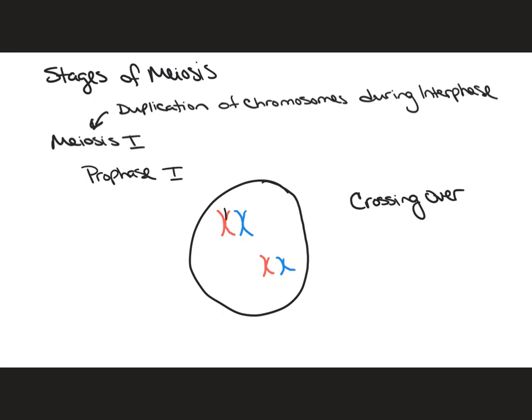These areas become so closely associated that they're capable of swapping genetic information with one another. You can see that there's some of the blue on the red and some of the red on the blue, where they swap that information. This is something unique to prophase one of meiosis, and it can happen between all homologous pairs at various locations along the non-sister chromatids.